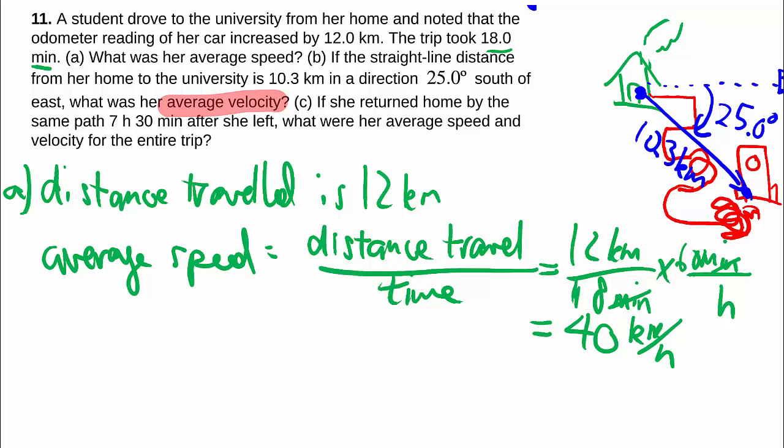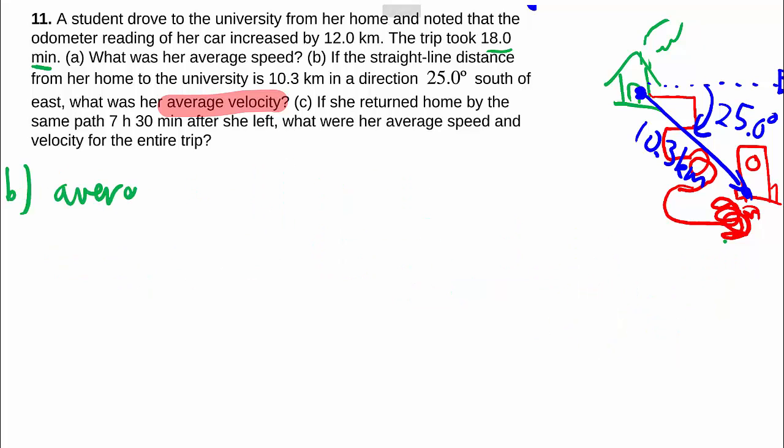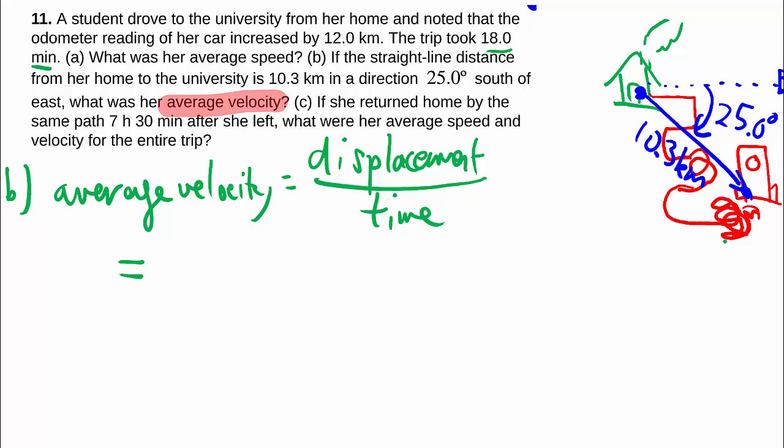So again average velocity is displacement over time. The displacement, of course we have to talk about the direction as well so technically that should be written in here although that doesn't affect this particular calculation. South of east, we should still have it in there.